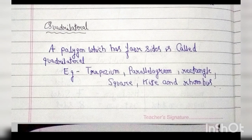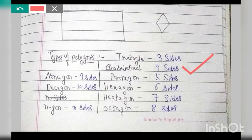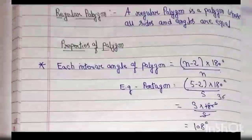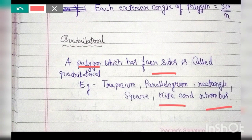Now let's go to the main topic of this chapter: quadrilateral. A polygon with 4 sides, closed and made of line segments, is called a quadrilateral. Examples of quadrilaterals are: trapezium, parallelogram, rectangle, square, kite, and rhombus. We will study the properties of all of these in this chapter.